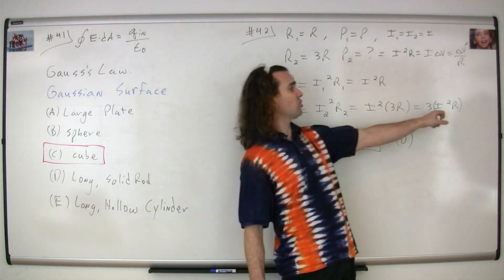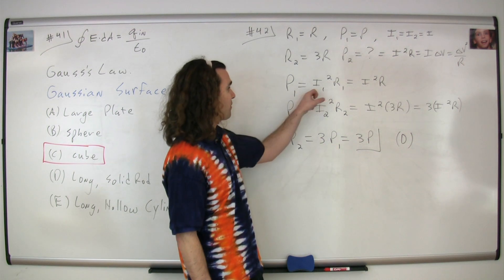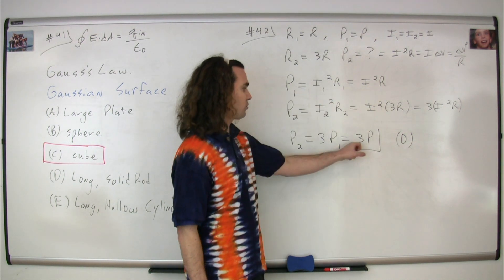So we end up with 3 times current squared times resistance, or 3 times the power dissipated by the first wire, which is 3P.